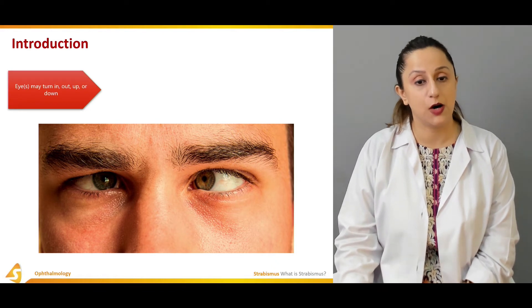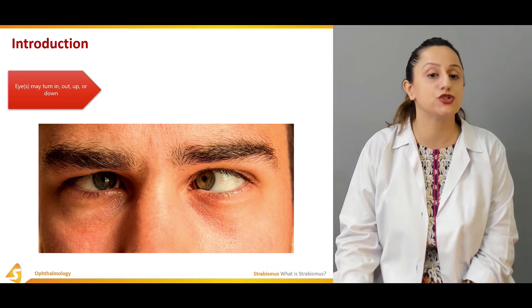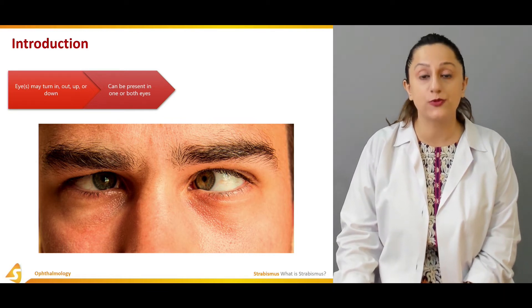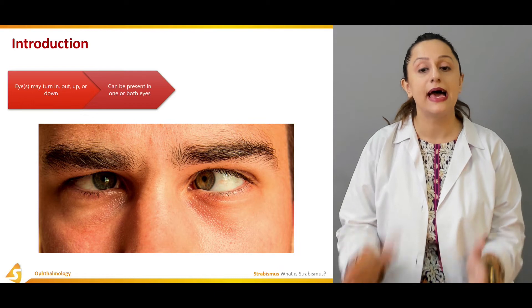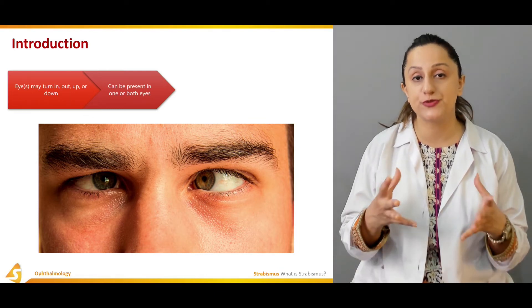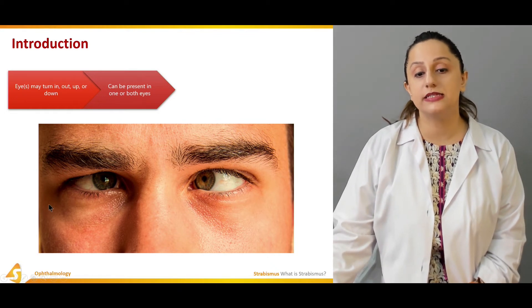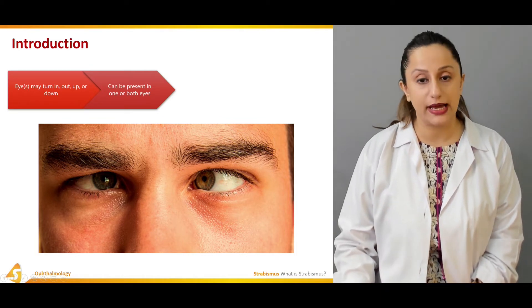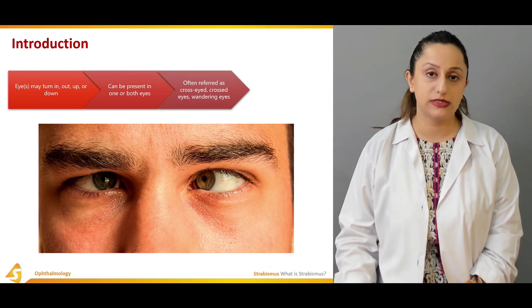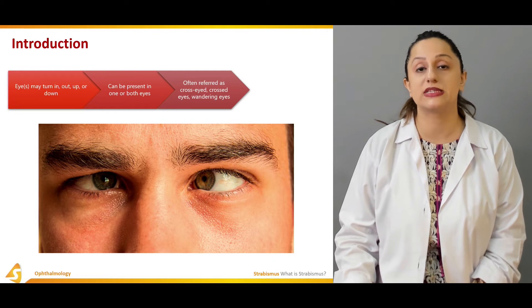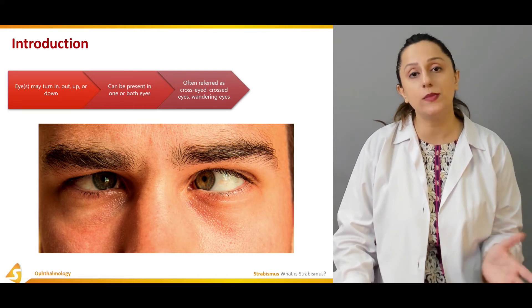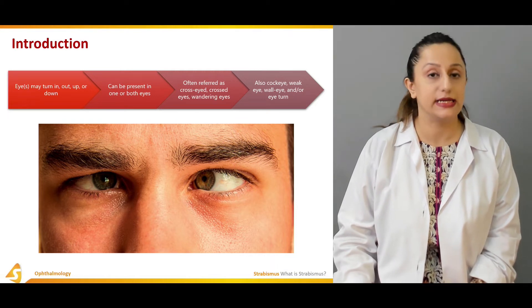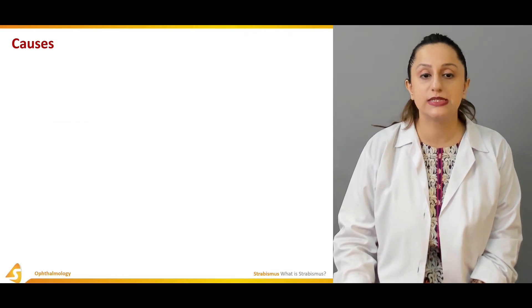The layman terminologies for strabismus include squints, crossing in, crossing out, wandering eyes, cock eye, weak eye, wall eye, and eye turns. The condition results from a lack of coordination between the muscles responsible for eye movement — due to muscle weakness or nerve damage. Problems with nerves transmitting information to the eye muscles can arise from infections, inflammatory conditions, autoimmune diseases, traumatic conditions, tumorous conditions, or even surgery.